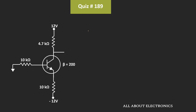The maximum value of the collector-to-emitter voltage equals 12.7V minus 4.465 kΩ times 1.0762 mA, which equals 7.89V.